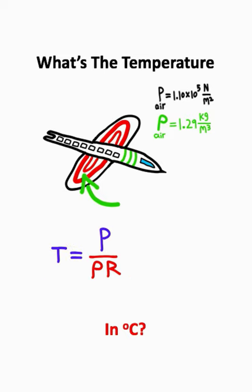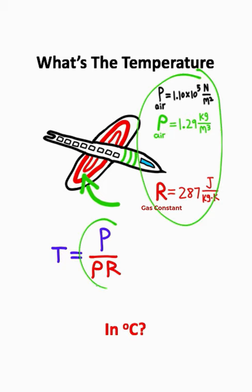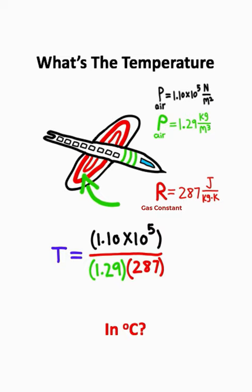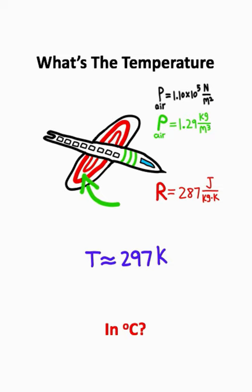The gas constant is 287. Let's go ahead and plug in all the variables that were given in this problem. You should end up with something that looks like this: our air pressure divided by the product of our density and gas constant. That's going to give you 297 degrees Kelvin.